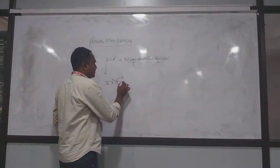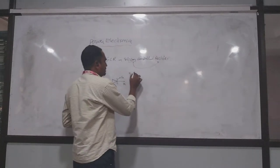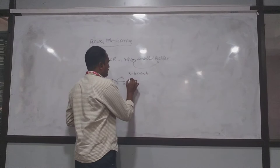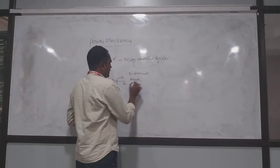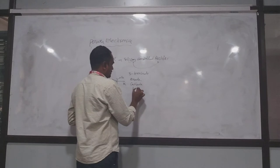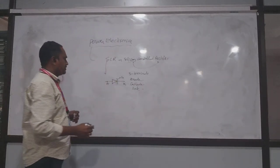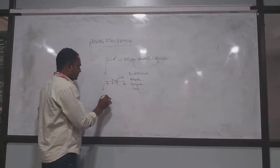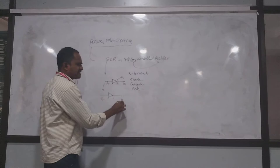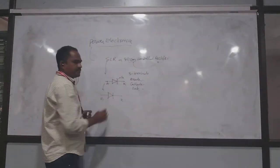SCR has three terminals: anode, cathode, and gate. If I compare with respect to a diode, which is similar to SCR, the only difference is the gate terminal. A diode is called an uncontrolled device because it doesn't have any control terminal. Whereas SCR is a controlled device.